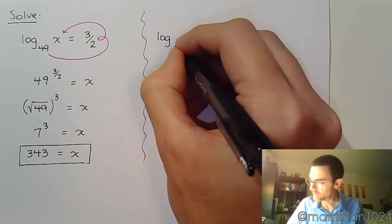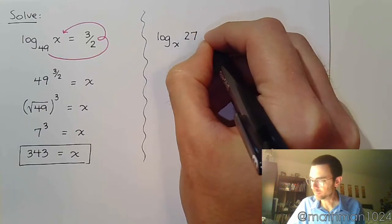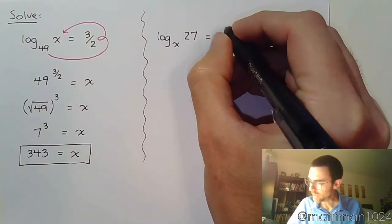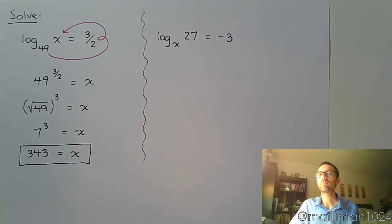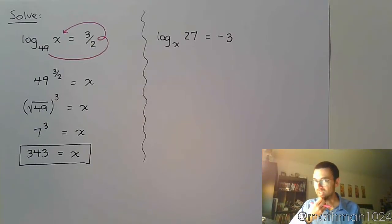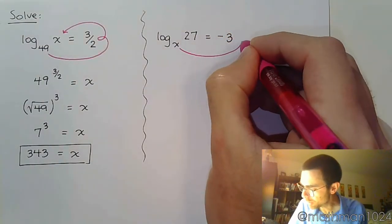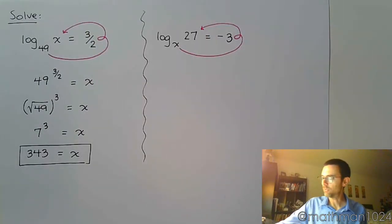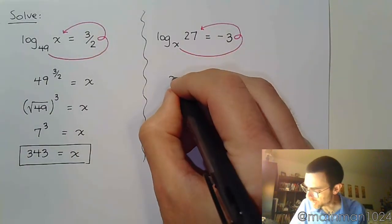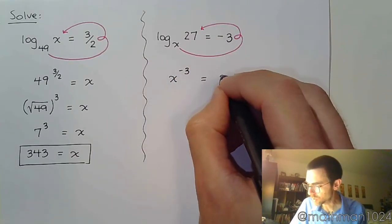Let's do log base x of 27 is equal to negative 3. Again, let's rewrite this because x is in a weird spot. By rewriting it as an exponential, maybe we'll get somewhere. Fly the plane — that's going to be x raised to the negative 3rd is equal to 27.